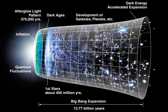The Big Bang Theory developed from observations of the structure of the universe and from theoretical considerations. In 1912 Vesto Slipher measured the first Doppler shift of a spiral nebula and soon discovered that almost all such nebulae were receding from Earth. He did not grasp the cosmological implications of this fact. Ten years later, Alexander Friedman, a Russian cosmologist and mathematician, derived the Friedman equations from Albert Einstein's equations of general relativity, showing that the universe might be expanding — in contrast to the static universe model advocated by Einstein at that time.